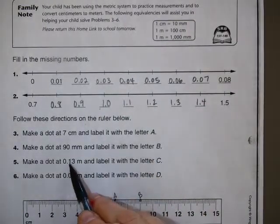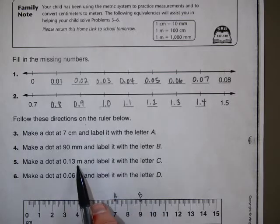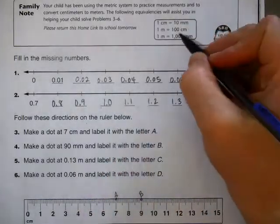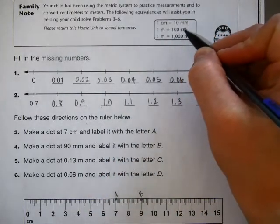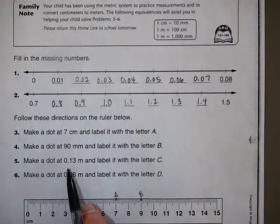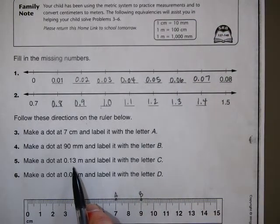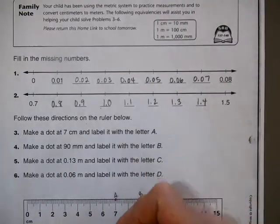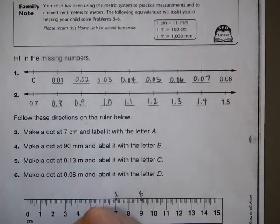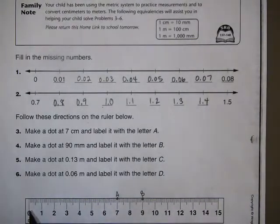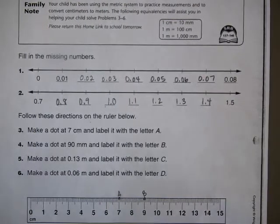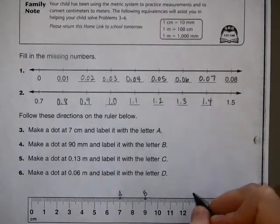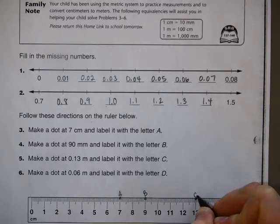Now, make a dot at 0.13 meters and label it with the letter C. So, 0.13 meters. I know that there's 100 centimeters in a meter. So this is 13 hundredths of a meter. Well, 13 hundredths of a meter is going to be 13 of these centimeters. Here. 13 hundredths of a meter. So I'm going to find 13 centimeters, because I know that there are only 100 of them. So I can do 13, 15 hundredths, and that's going to be the letter C.